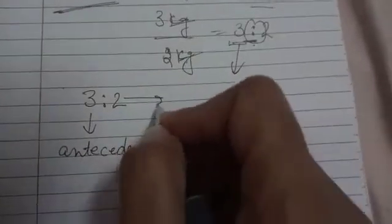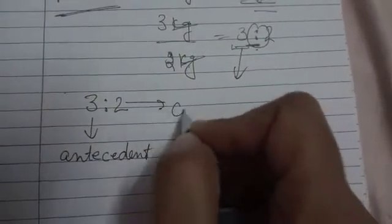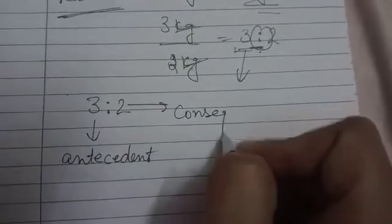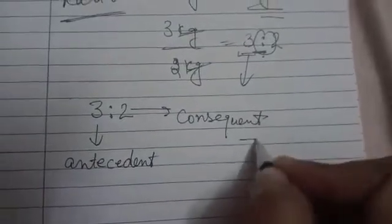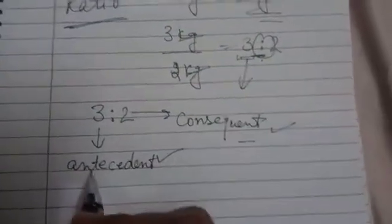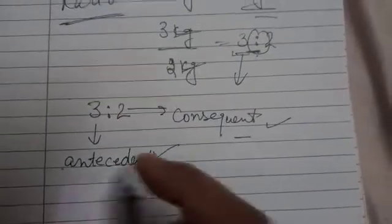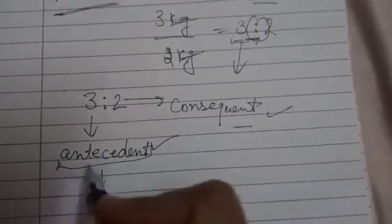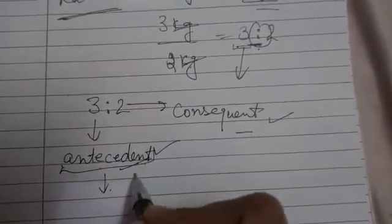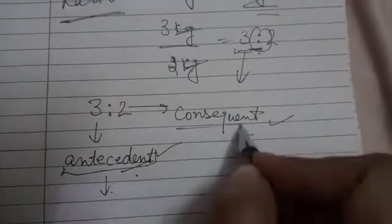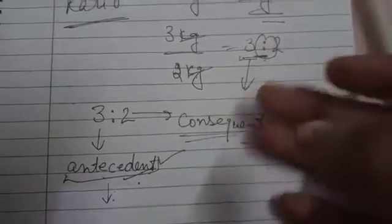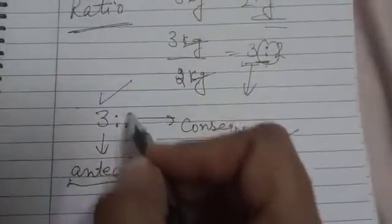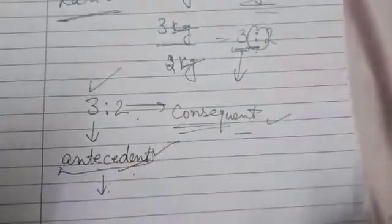And the second term is called consequent. Antecedent, you can remember by its meaning - the term that comes earlier. Antecedent means earlier, and the second term is consequent.